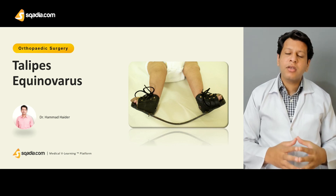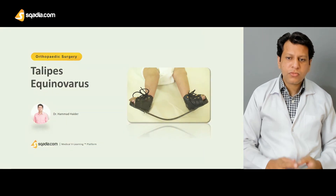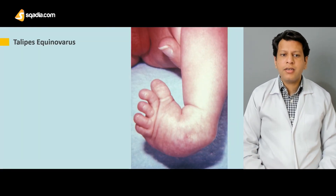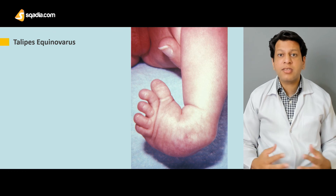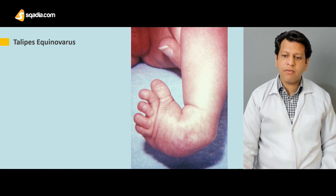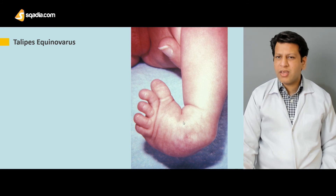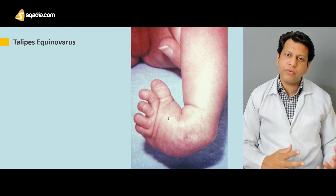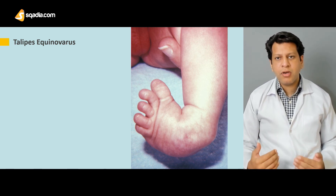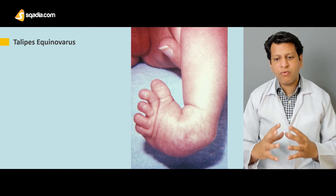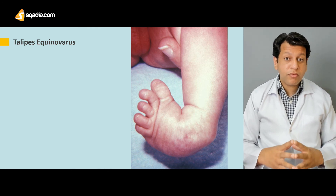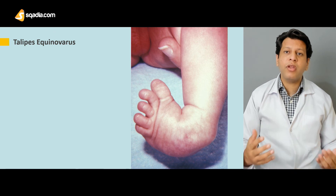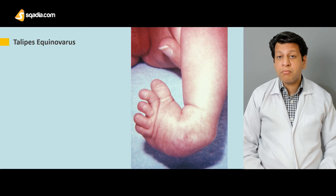Among all musculoskeletal abnormalities, the most common is congenital talipes equinovarus, also called CTEV, and for short it is called club foot. If you see the shape of the foot, it looks like a club. There are abnormalities in the forefoot, midfoot, as well as in the hindfoot, and these abnormalities eventually lead to a foot formation which mimics a club foot. It can be bilateral or unilateral; almost 50 percent of cases are bilateral.